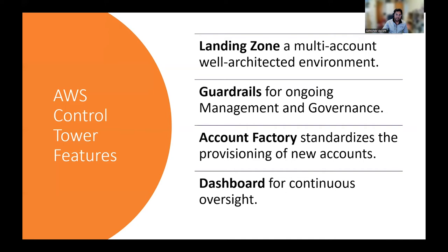The next feature is account factory, also known as the vending machine, which enables you to provision accounts in the landing zone. As a configurable account template, it helps you standardize the provisioning of new accounts with pre-approved account configurations. It utilizes the capabilities of the AWS Service Catalog service. Last but not least is the dashboard, which provides continuous visibility into the AWS environment. You can view the number of organization units, provisioned accounts, and enabled guardrails, as well as a list of non-compliant resources with respect to enabled guardrails.